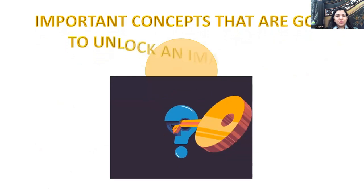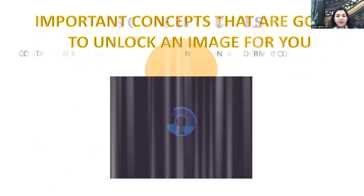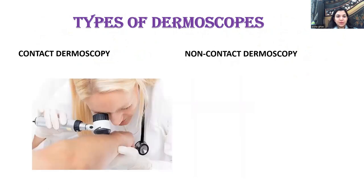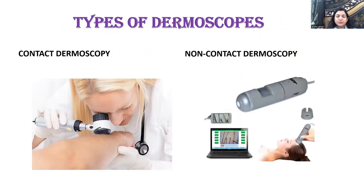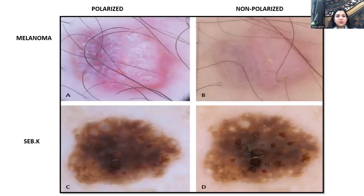Important concepts before doing dermoscopy include contact and non-contact dermoscopy. In contact dermoscopy, you bring your eye to the lens of the dermoscope. In non-contact, a hard piece connects to the system and you place the device on the patient's skin without bending down — you view through an attached screen. Cordless devices are available today. Both contact and non-contact are in practice.